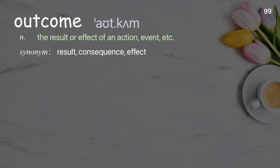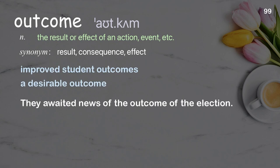Outcome: the result or effect of an action, event, etc. Examples: improved student outcomes, a desirable outcome. They awaited news of the outcome of the election.